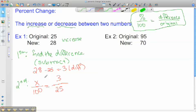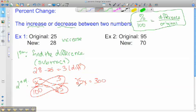To solve it, we solve all our proportions the same way. Cross multiply, so you got 25x equals 300. And solve: x equals 12%. So it was 12%, and because the number got bigger, it is a 12% increase.